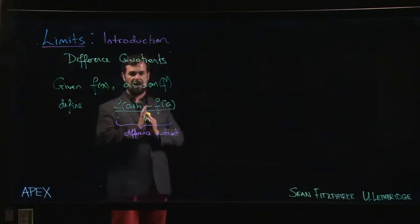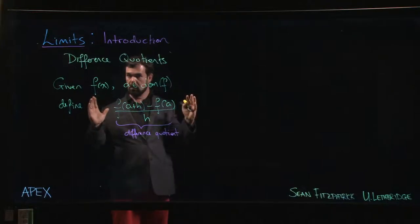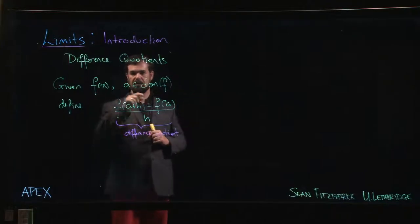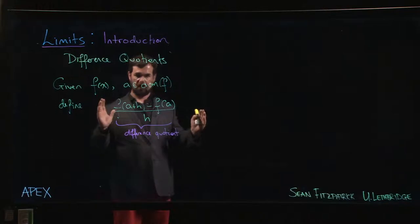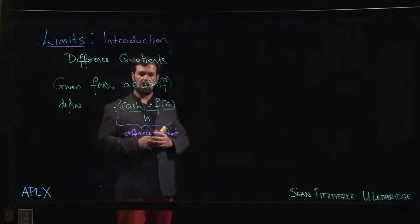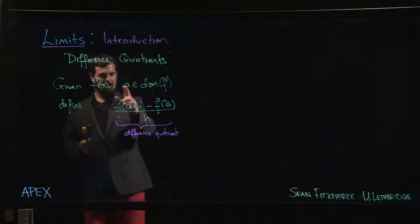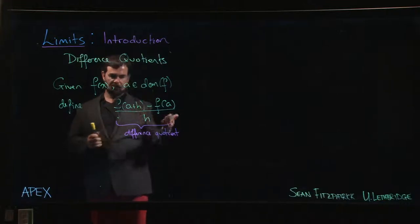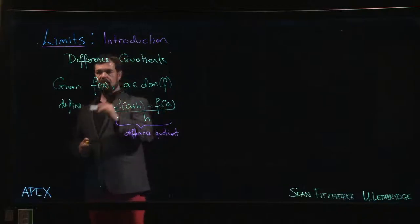So we want an interval containing that point. Now a is a number here, right? This H though, this is some unknown quantity. H is now a variable. So what's really happened is from this original function, by choosing some point in the domain, you've actually defined a new function.